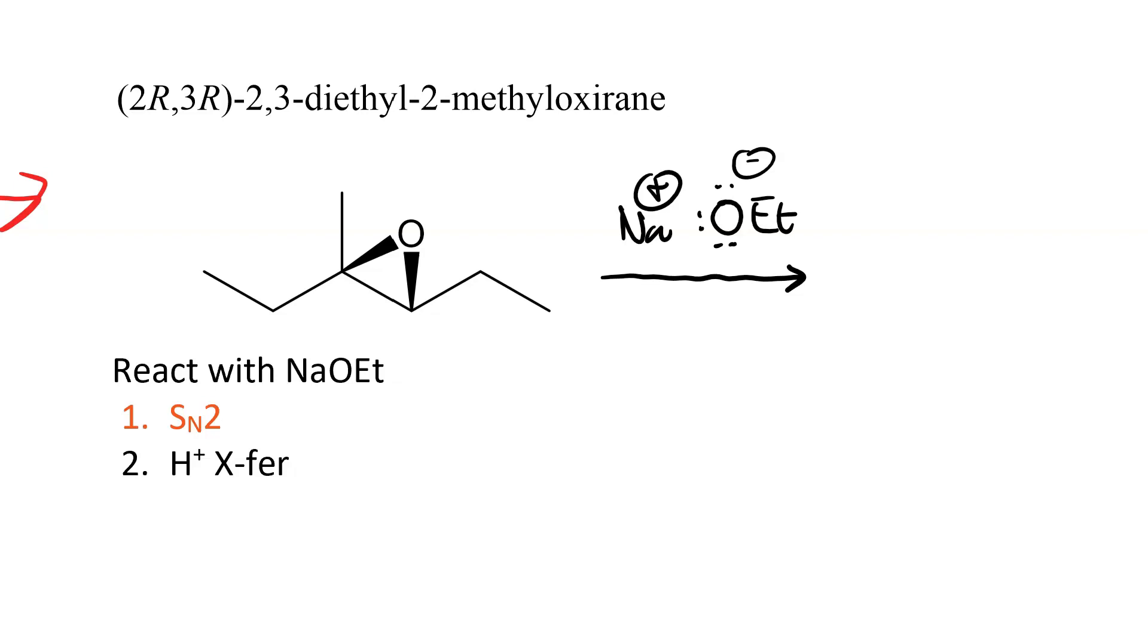So instead of starting with proton transfer, we start with nucleophilic attack. And the ethoxide nucleophile is going to attack the less substituted ring position. That's because electronics is not a factor here. Because the ring is not protonated, there is not a good resonance structure with the ring open. So it attacks here, and the alkoxide leaves here.